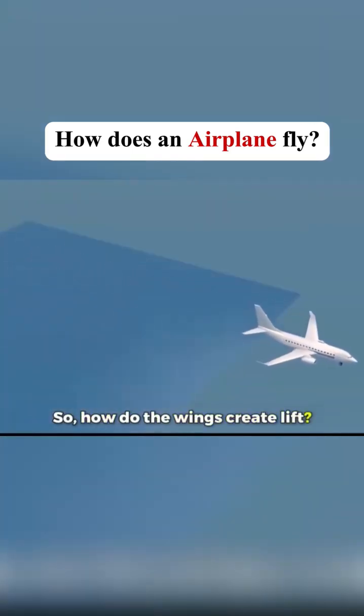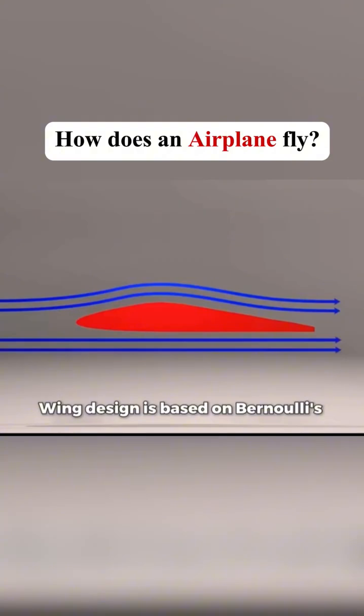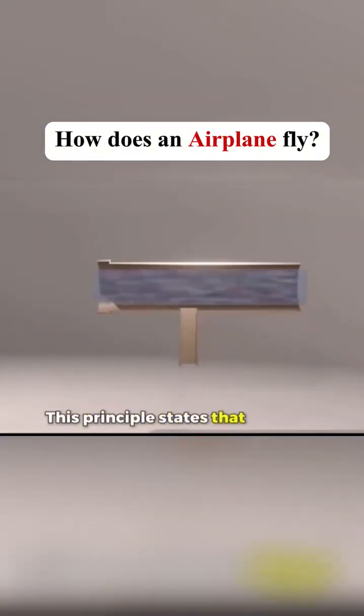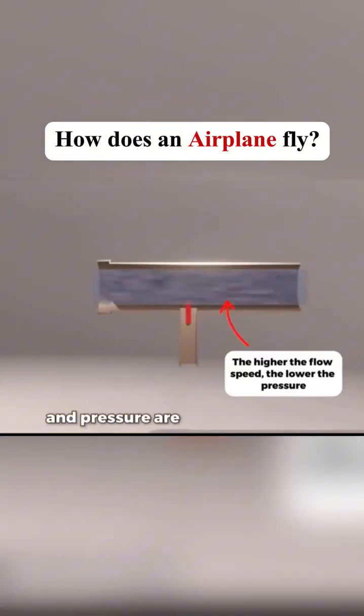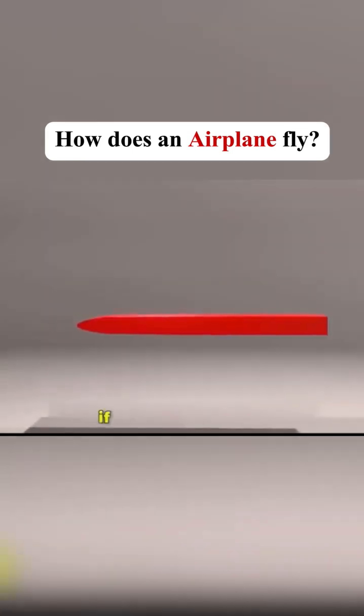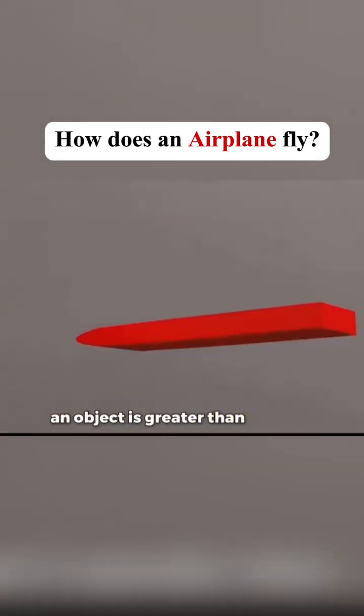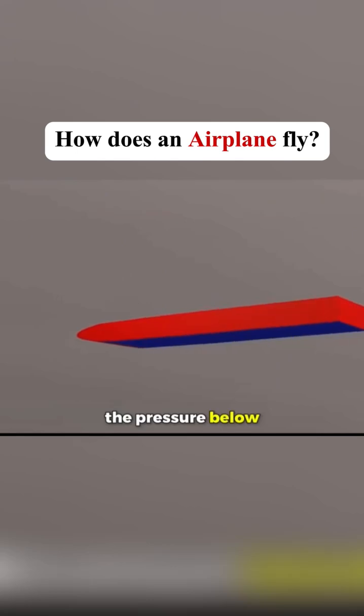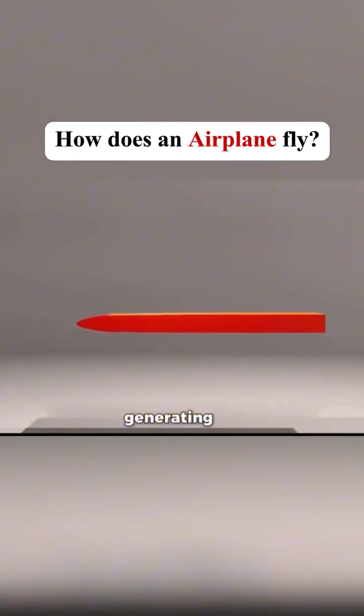So how do the wings create lift? Wing design is based on Bernoulli's principle. This principle states that airspeed and pressure are inversely related. Thus, if the airspeed above an object is greater than below it, the pressure below becomes higher than above, generating lift.